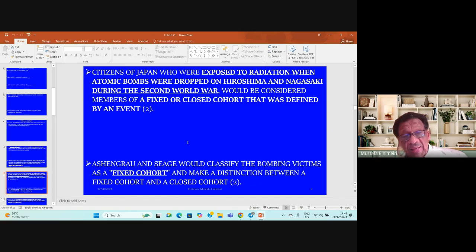Ashing Crow and Sieg classify the bombing victims as a victim cohort and make distinctions between the fixed cohort and the closed cohort.